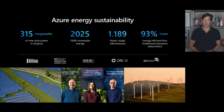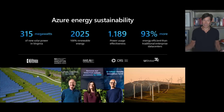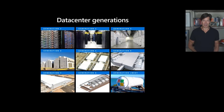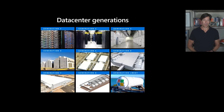Our average PUE — power usage effectiveness — which is the industry standard way to measure data center efficiency, is just 1.189 across all of our data centers, including data centers we created that are still operating at 15 years old. Our latest generation data centers have even lower PUEs. To illustrate this, I want to walk through Microsoft's data center evolution, going back in time to see how we've taken advantage of newer technologies and experimented with new ways to be efficient.